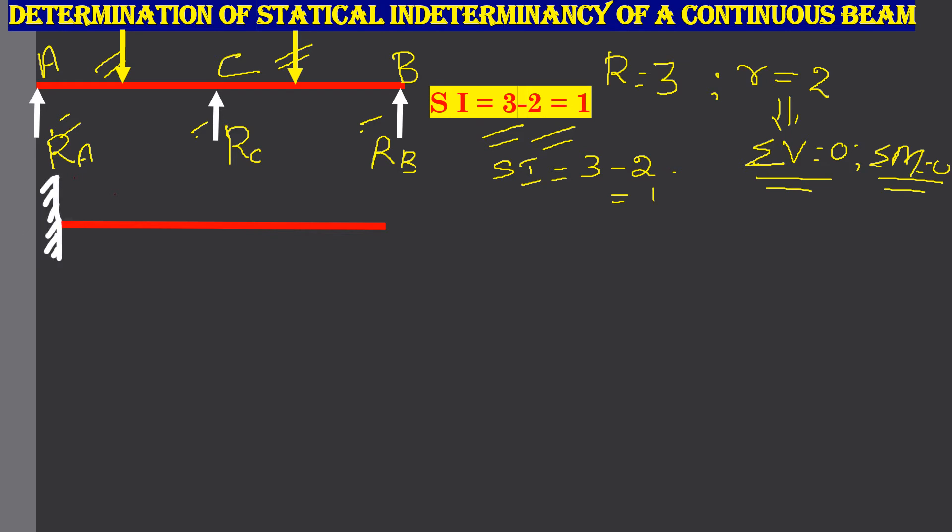You have a beam. It is supported by a fixed support at A, a simple support or a hinged support at B and a simple support at C. It is loaded by two vertical loads. So, our statical indeterminacy becomes 4 minus 2. At this support A, we will have a vertical reaction RA and a moment MA. So, number of reactions is 2.